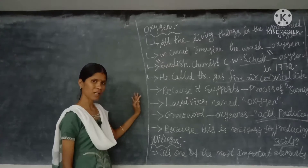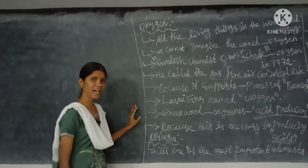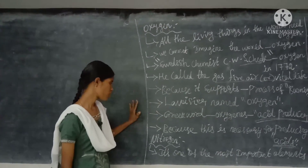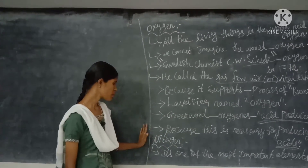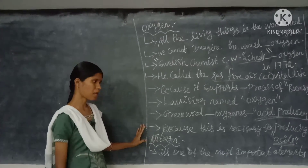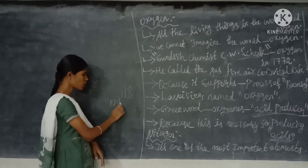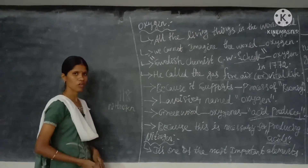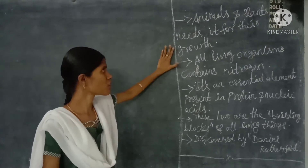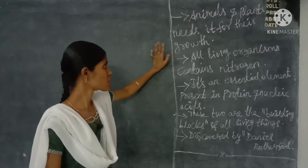In those days, acids were produced using oxygen, that is why it is called an acid producer. The second gas is nitrogen. Nitrogen is one of the most basic and important elements. Out of 118 elements, nitrogen is one of the basic elements on Earth.